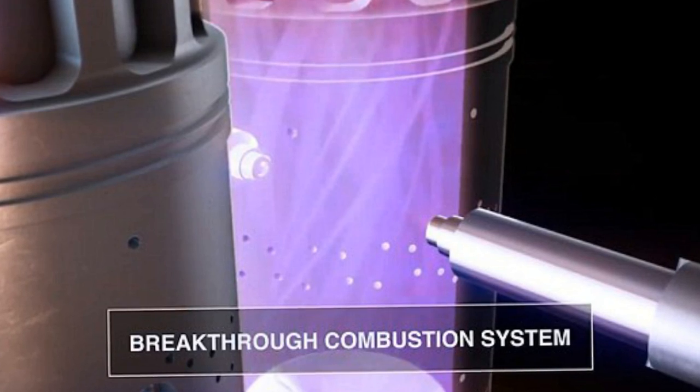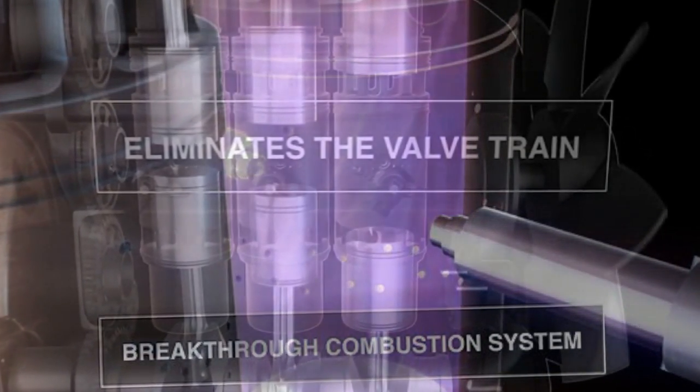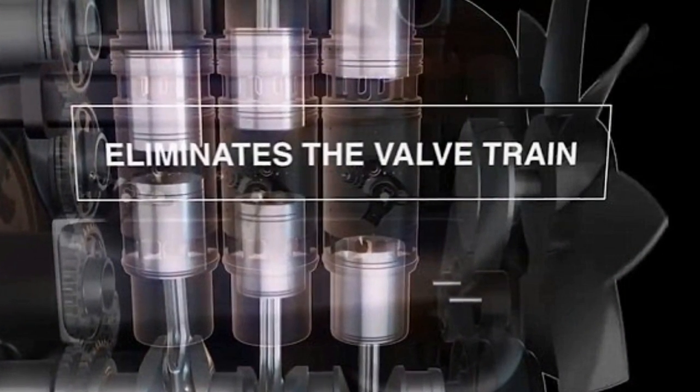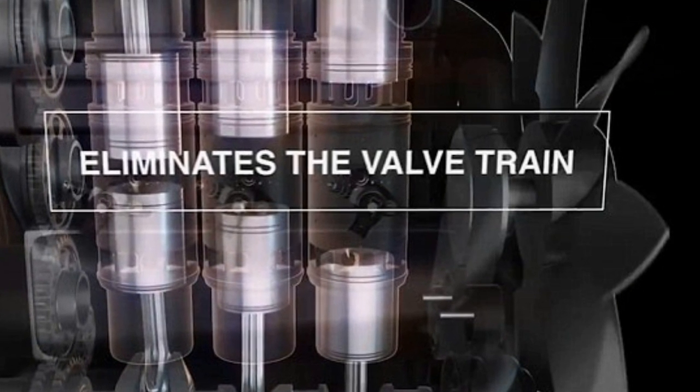But Achates's design takes the car engine in a different direction. Its opposed-piston engine works using two pistons in each cylinder instead of one. Power is generated when the fuel and air mixture is ignited, driving the two pistons apart.